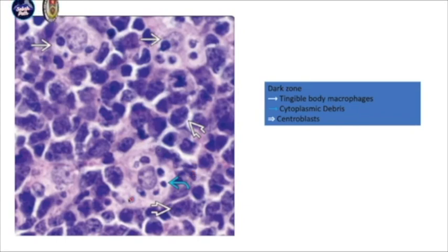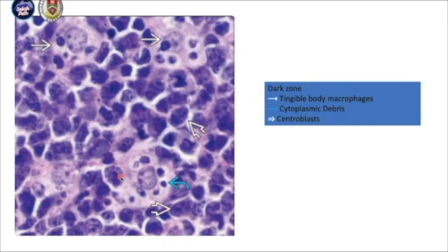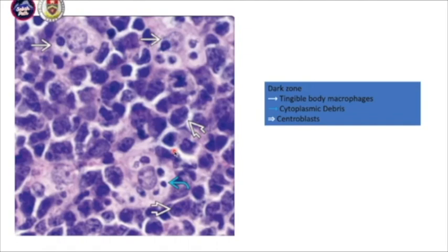Within the benign lymphoid follicle, you also have tingible body macrophages. So if the lymphoid follicle has a prominent, well-defined germinal center with a well-defined mantle zone rimming the area, and within the germinal center you can see tingible body macrophages with light and darker areas — these are the characteristics of benign or reactive lymph nodes.